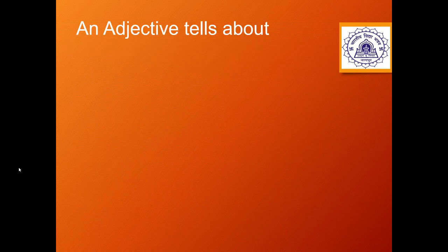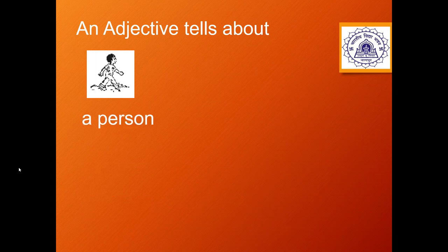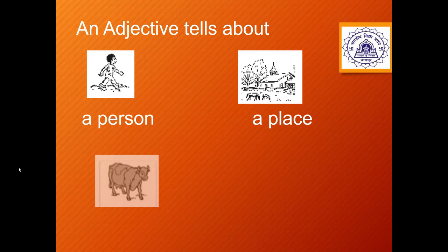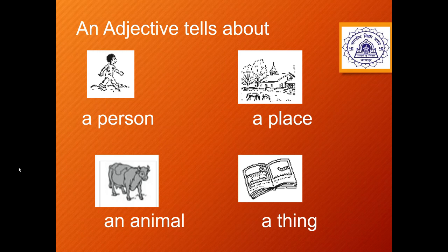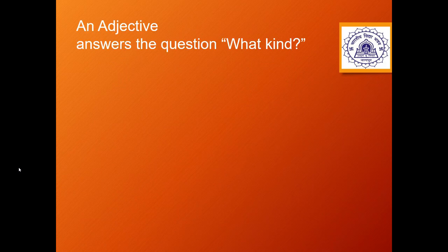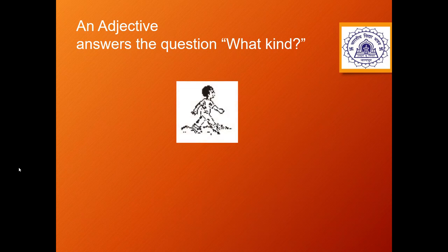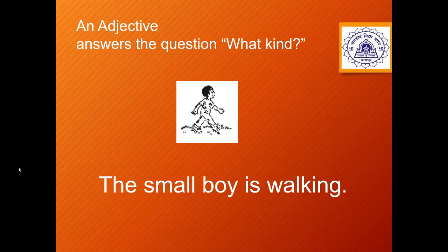So, let us see what an adjective tells us about. It tells us about a person, a place, an animal, or a thing — basically they describe a noun and sometimes even a pronoun. The adjective answers the question 'what kind.' For example, 'The small boy is walking' — ask the question: what kind of boy is he? He is a small boy. So the adjective here is 'small.'